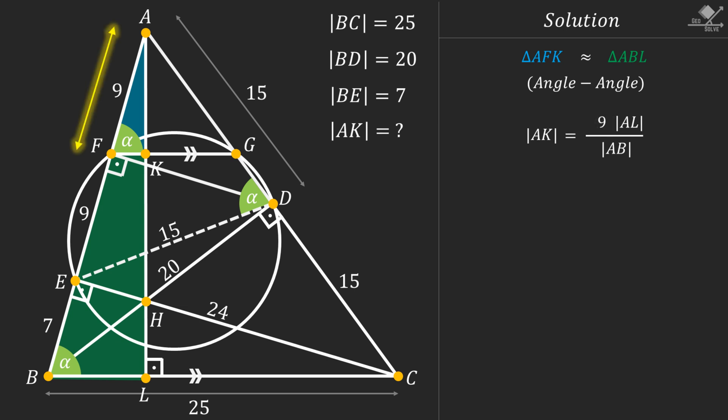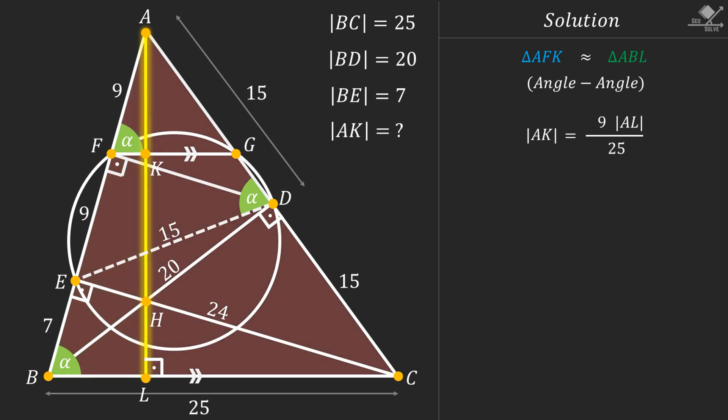We know that AF is 9 units and AB is 9 plus 9 plus 7 which is 25 units, but we don't know the length of line segment AL. To find that let's focus on the largest triangle ABC. Write the area of this triangle using AL as height which is AL times BC over 2, and this time write the area using EC as height which is EC times AB over 2. When we insert the values we know, we can find AL as 24 units.